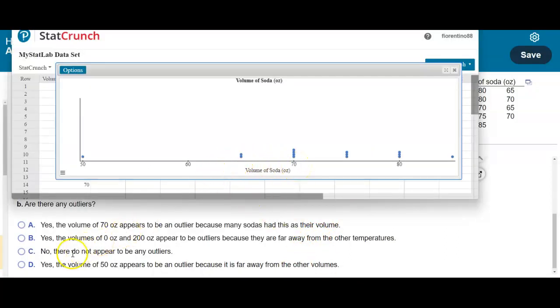Okay. Then it says, yes, the volumes of zero to 200 appear to be outliers. Well, that's not true. Okay. It says, no, there do not appear to be any outliers. Or do we say, yes, the volume of 50 ounce appears to be an outlier because it is far away from the other volumes.